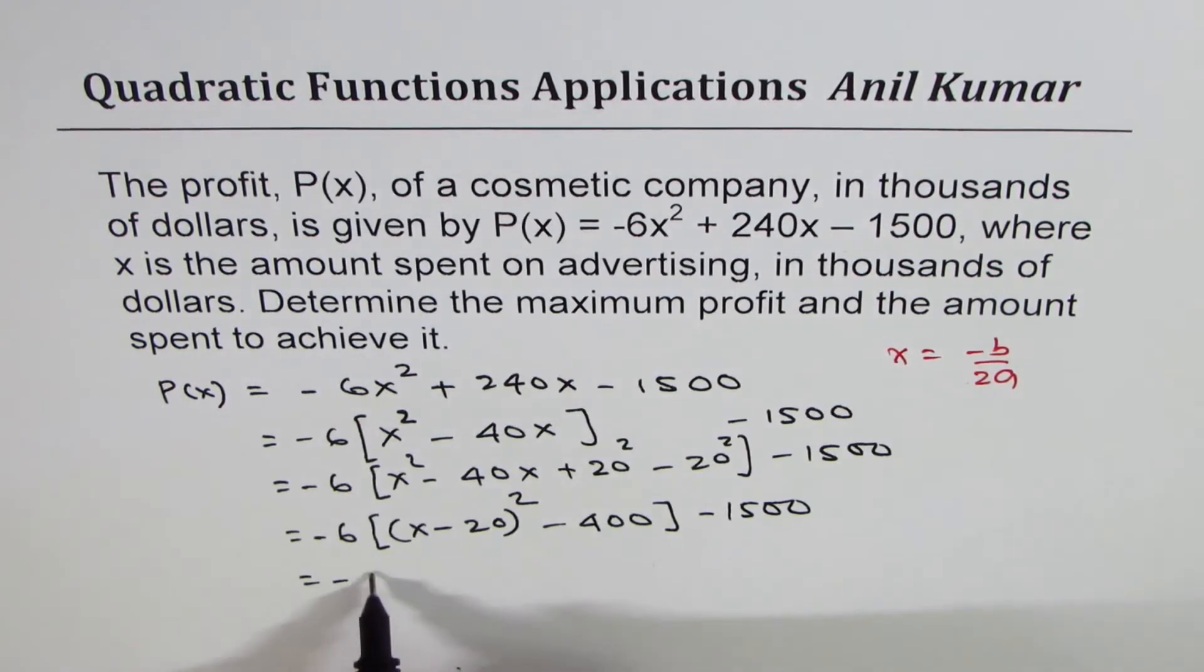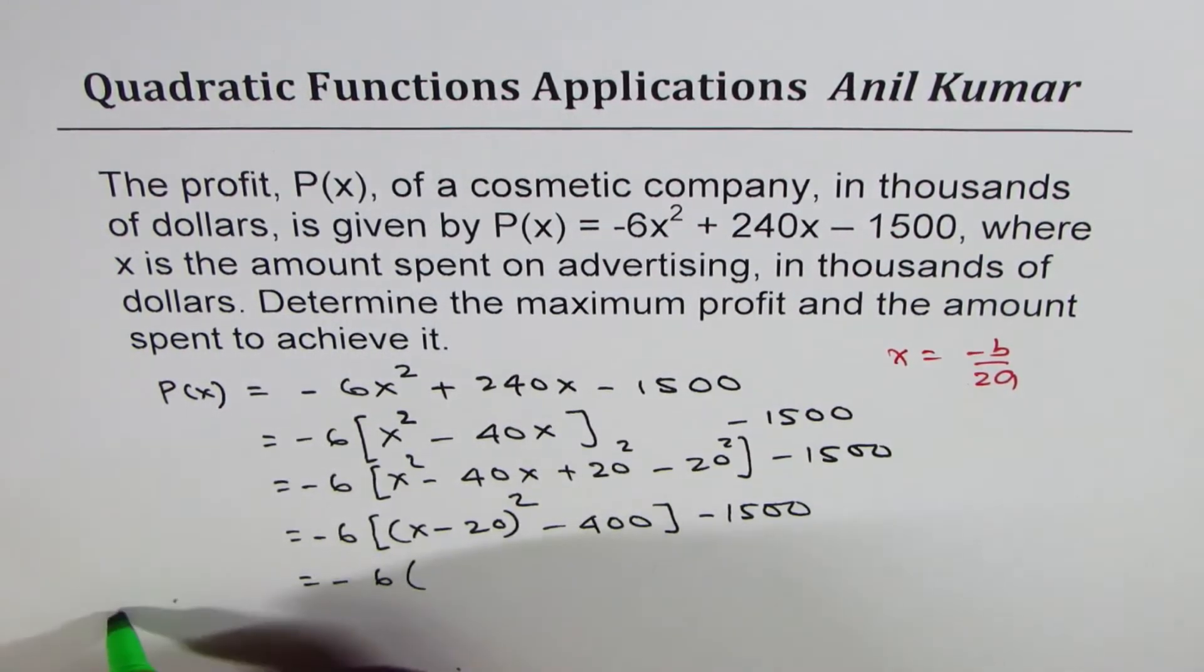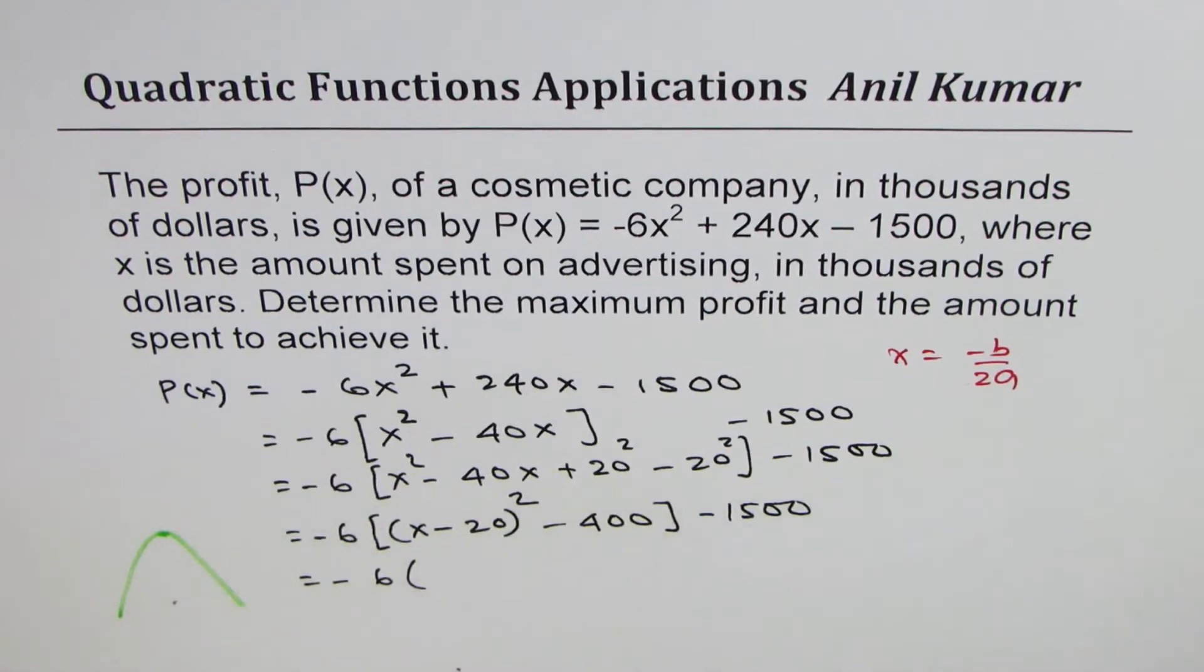Open the bracket so we get -6. -6 indicates leading coefficient. That means parabola is kind of like this. We are looking for a maximum. Correct?